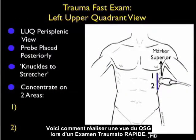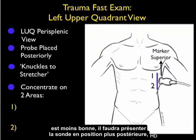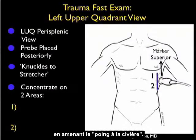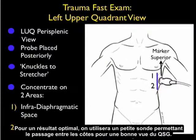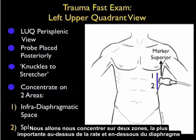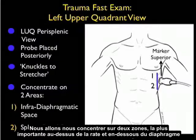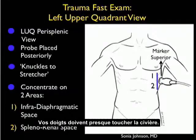Here's a slide reviewing how to perform the left upper quadrant view of the trauma FAST exam. As the spleen offers less of an acoustic window, we need to bring the probe in from a more posterior position — thus the mantra "knuckles to stretcher." Optimally we're using a smaller footprint probe that can get in between the ribs. Position the probe in the long axis view with the probe marker towards the patient's head, at about the mid axillary line or posterior axillary line, with your knuckles almost touching down to the bedside.